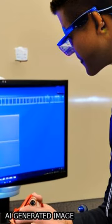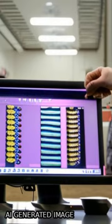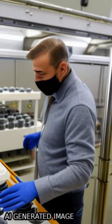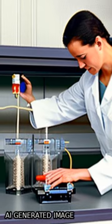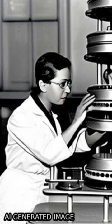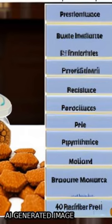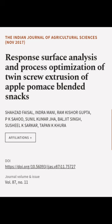The optimized extrusion parameters for quality snacks were 14% moisture, 130°C barrel temperature, and 300 RPM screw speed. This article was authored by Shahzad Faisal, Indra Mani, Ram Kishore Gupta, and others.